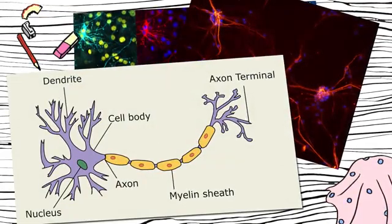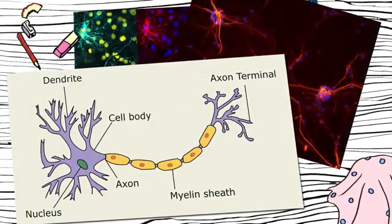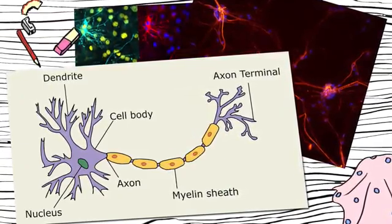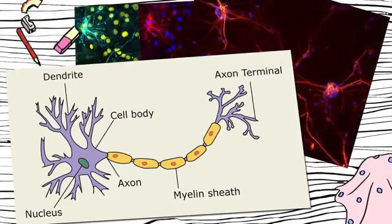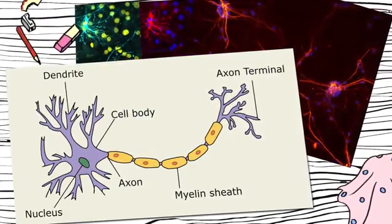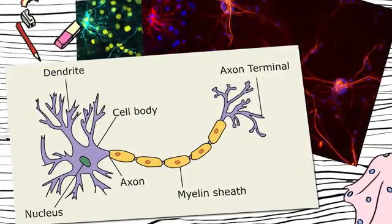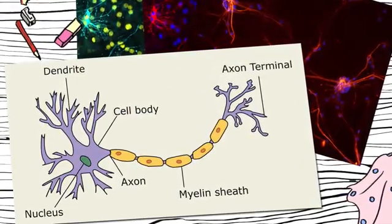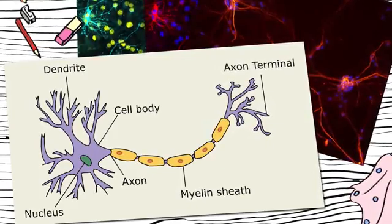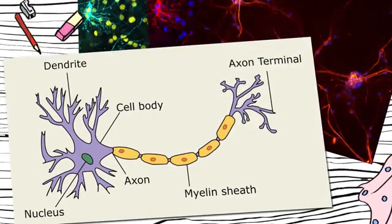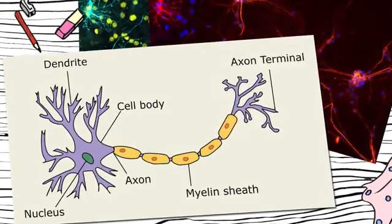So what you see is the dendrites, and dendrites receive signals from other neurons, either excitatory, like pluses, or inhibitory, minuses. And then they get to the cell body, which sums up these pluses and minuses. And when you reach a certain threshold, a certain amount of pluses, there is neural firing. And the firing takes place through the axon.